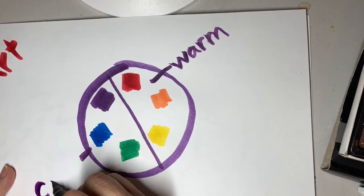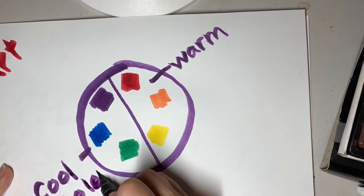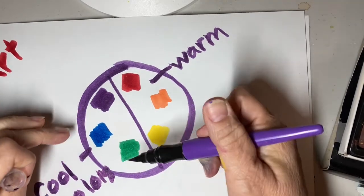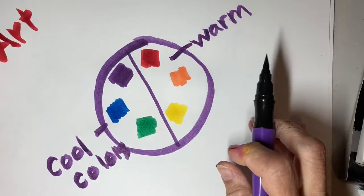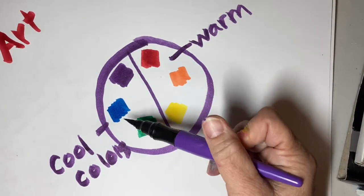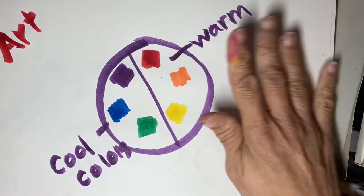These are the cool colors. If you think about things like the ocean or ice, you often see shades of blue and purple in there, and then we can add in green too. So cool colors, warm colors.